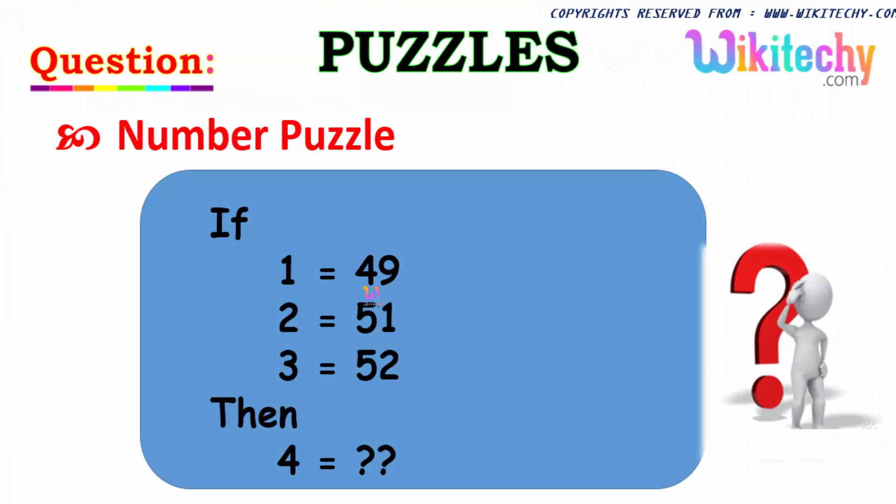Considering 1 equals 49 and the second number is 51, the third number is 52, and what could be the fourth number?